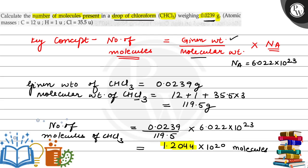That is the answer to this question and by using the key concept to find out number of molecules we have given weight divided by molecular weight multiplied by Avogadro's number and this is the solution to this question. I hope you understand it well, all the best.